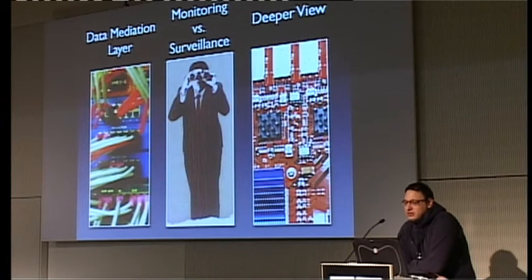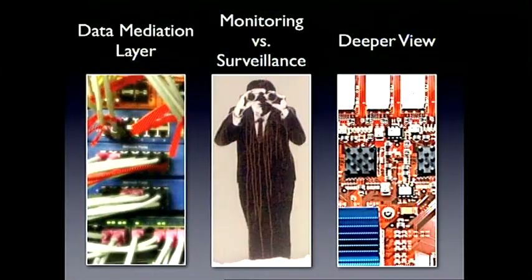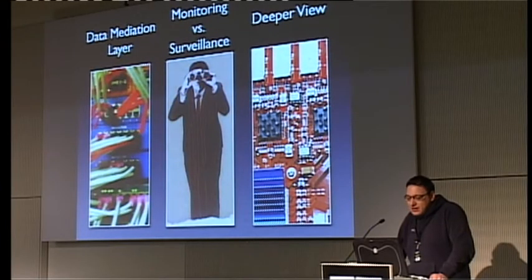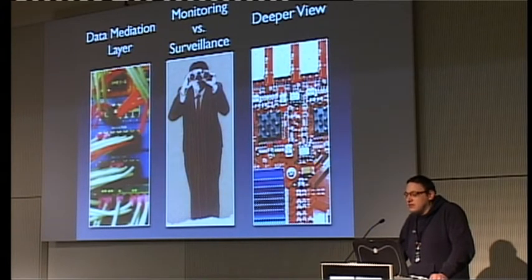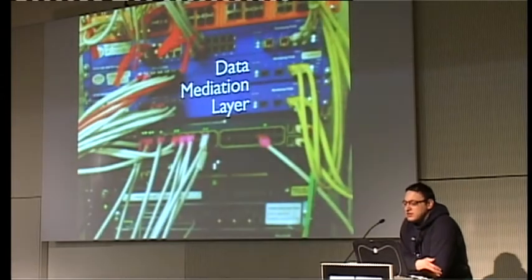We have three main parts. The first part, I will introduce you to the name of the data mediation layer — a quite new thing to data analysis. The second part is about monitoring and the difference to surveillance, what's the difference and what you can do nowadays without data retention — how it's possible to capture data or identify persons without data retention. The third part is a deeper view about the devices themselves which are used. Let's start with the first part: data mediation layer.